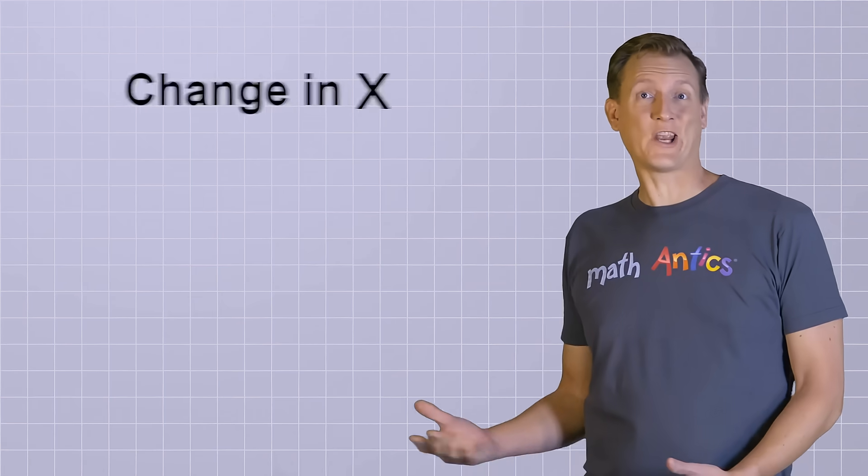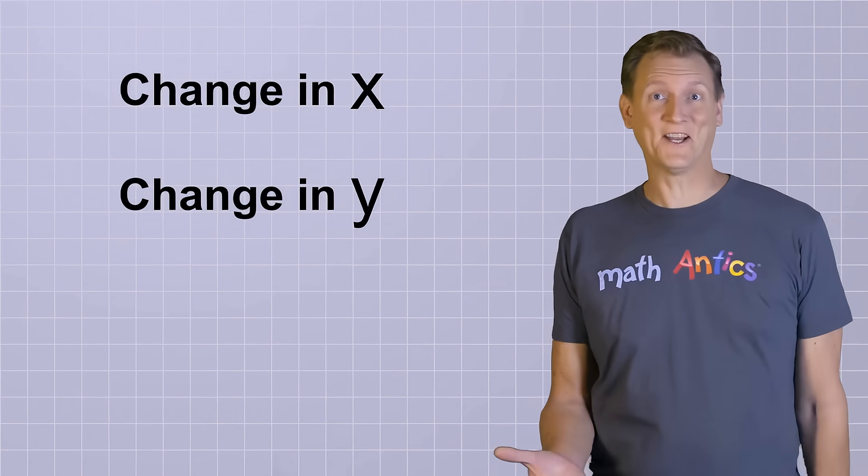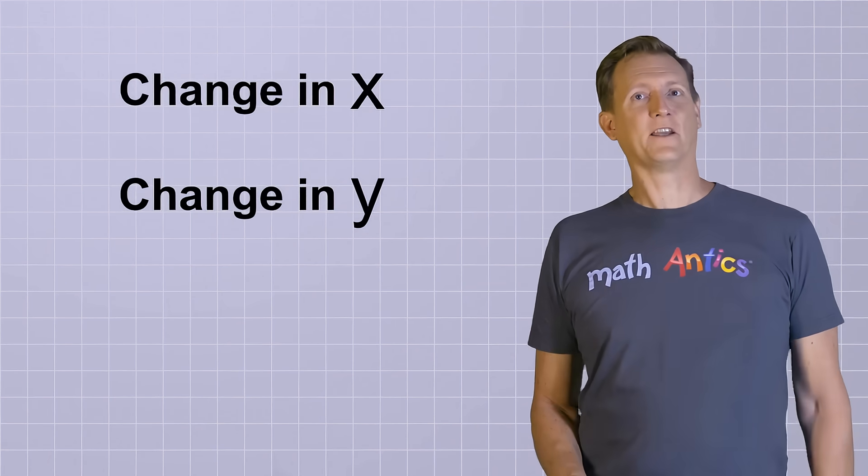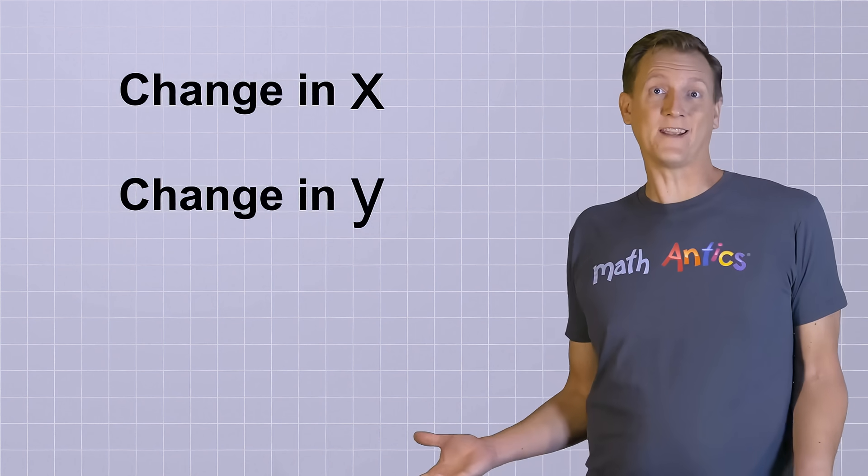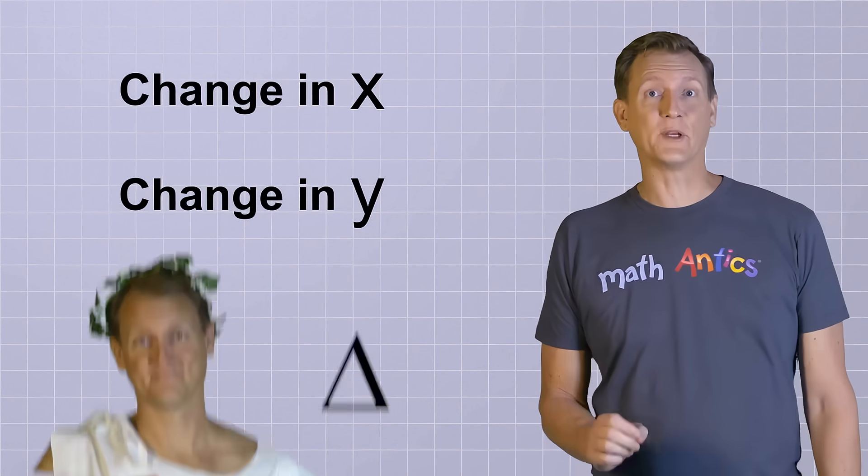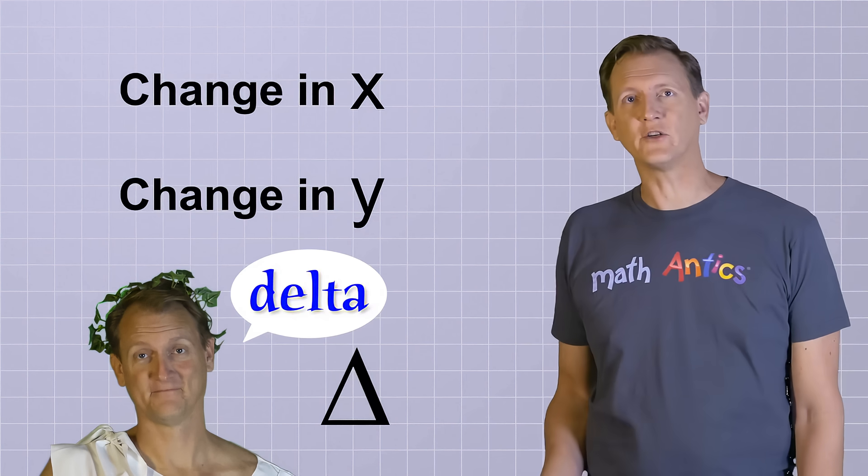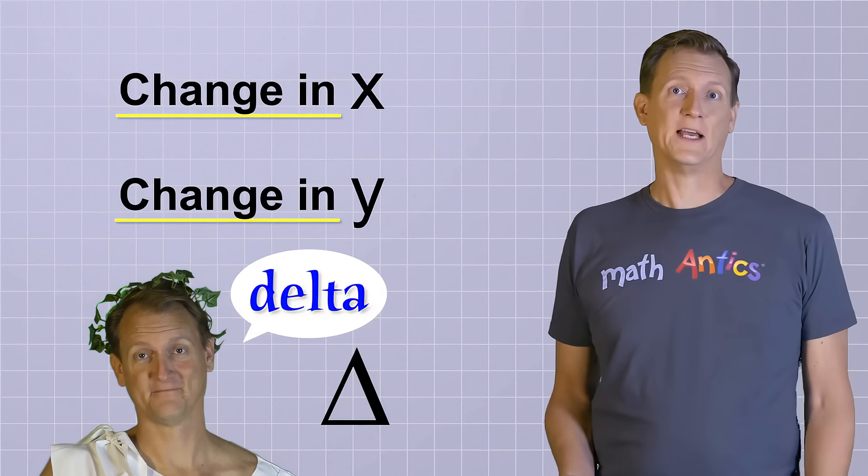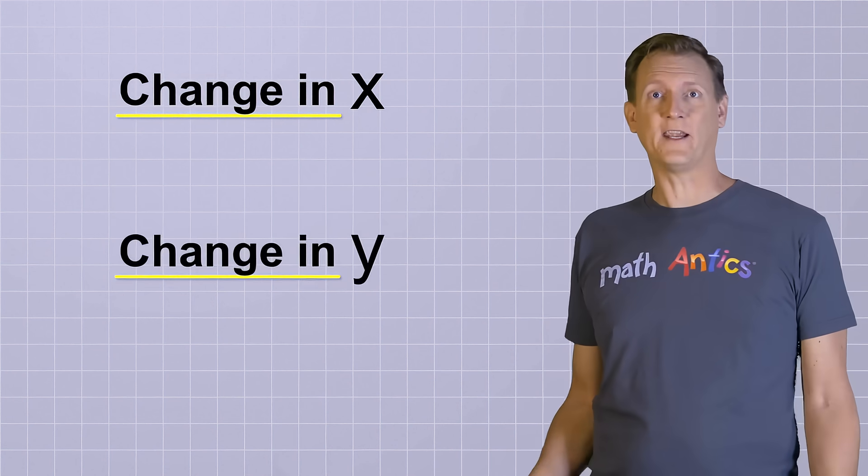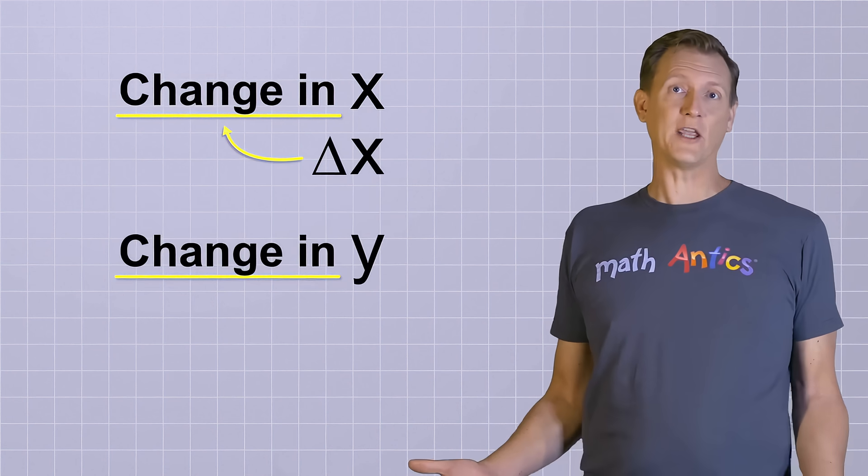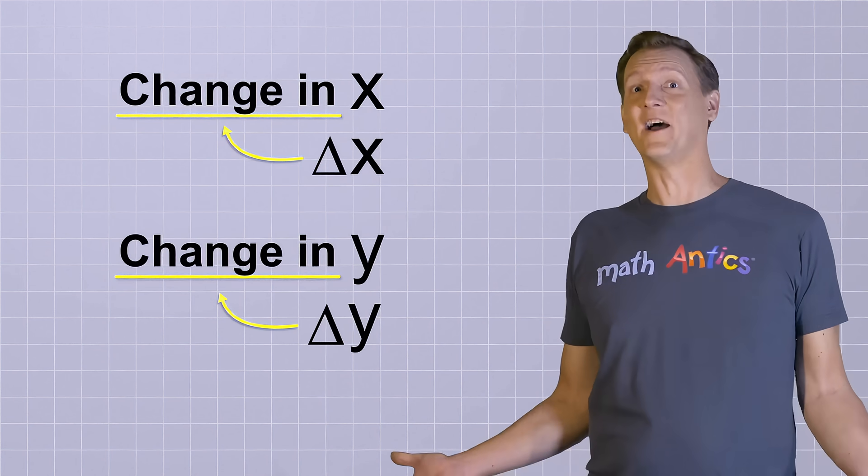That's cool, but the names change in x and change in y are kinda long. Fortunately, mathematicians have a shorter way of saying the same thing. They use the Greek letter delta as an abbreviation for the words change in. That means you can just write or say delta x to mean the change in x, and delta y to mean the change in y.